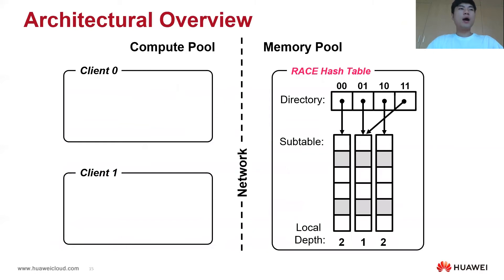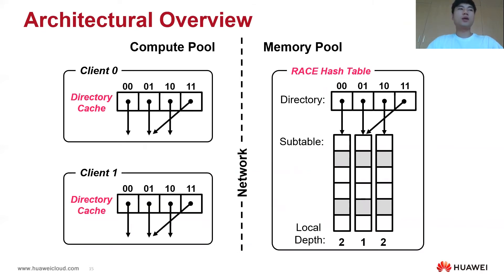This is an overview of the RACE hashing architecture. The RACE hash table is stored in the memory pool. The client in the compute pool stores the directory in local cache. Thus, for a search request, RACE hashing first looks up the directory using local access and then uses RDMA verbs to access only the subtable.